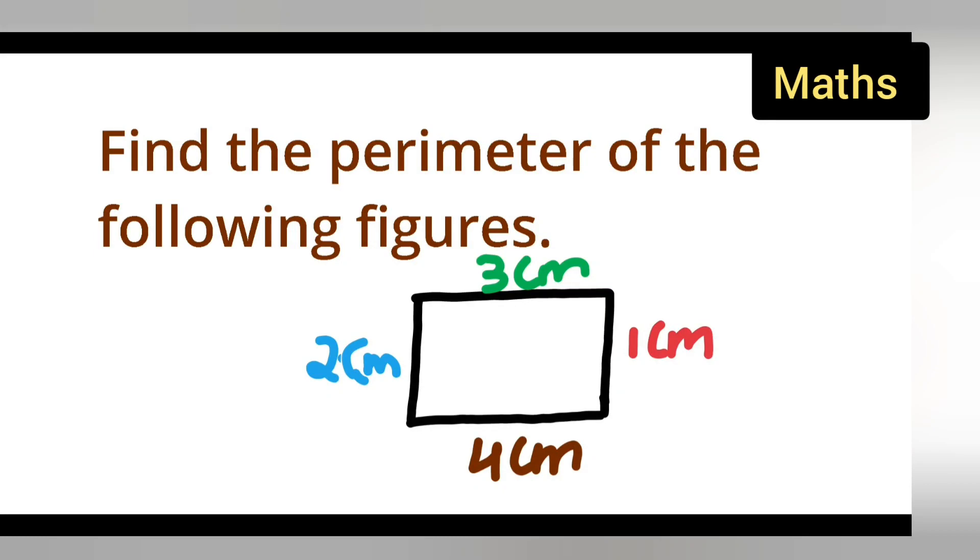Welcome to today's class of mathematics. Today's question is about the perimeter. We need to find the perimeter of the following figure. Now this is a rectangle figure, right? And we need to find the perimeter, which means that we have to add all the sides.